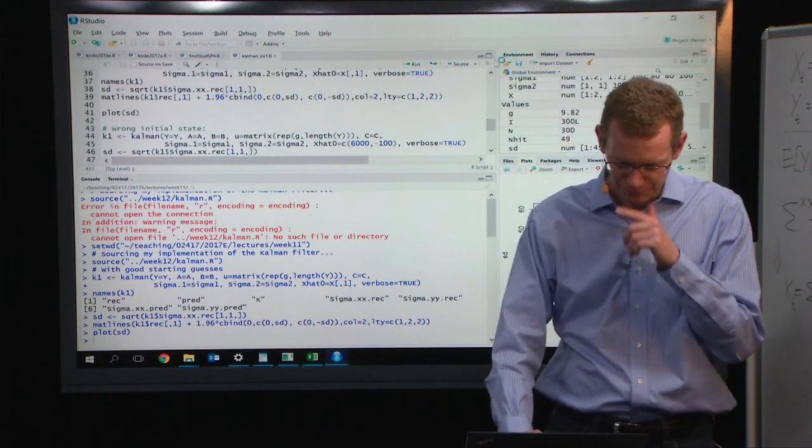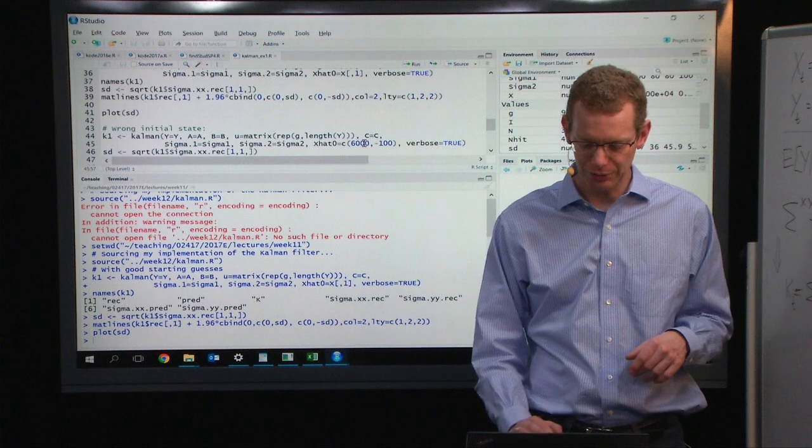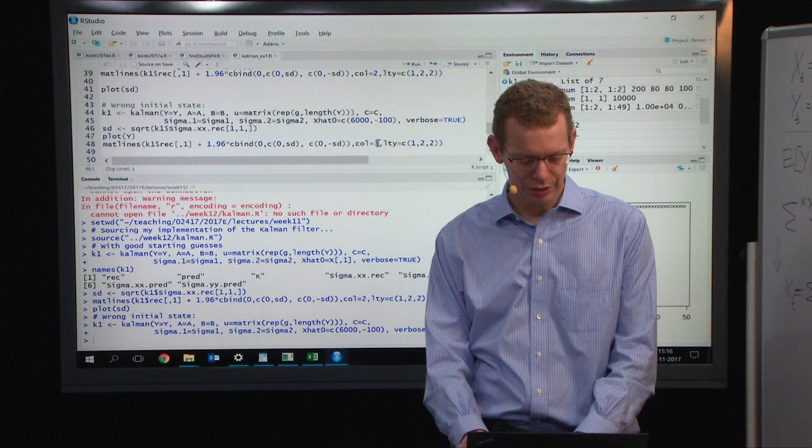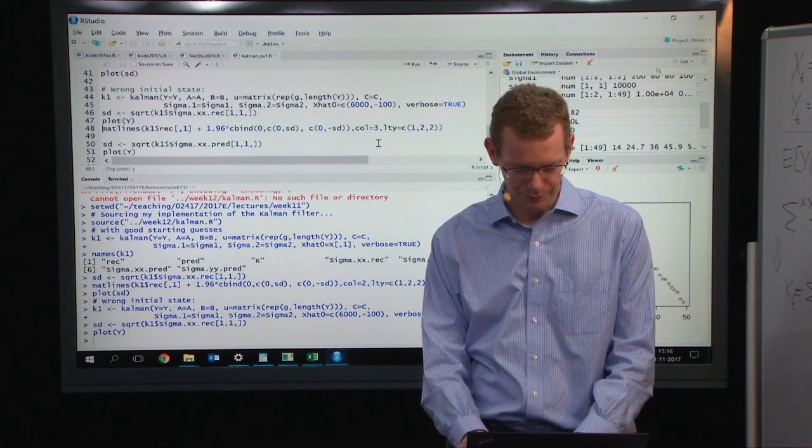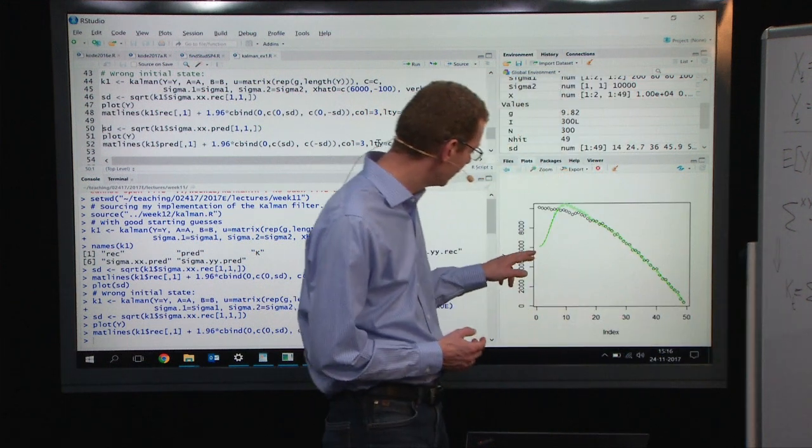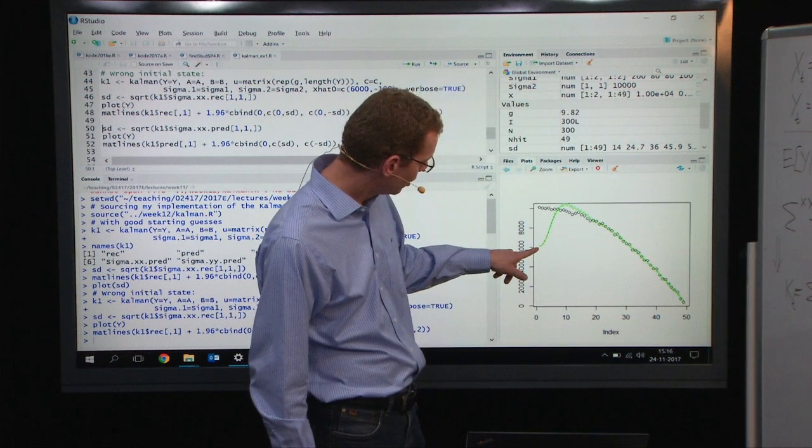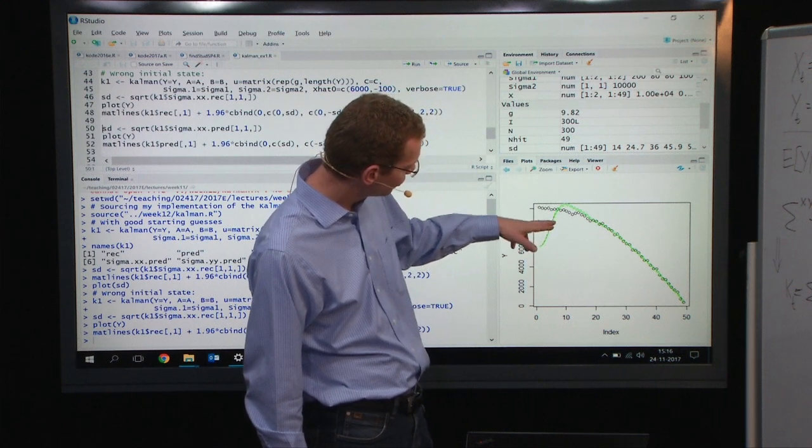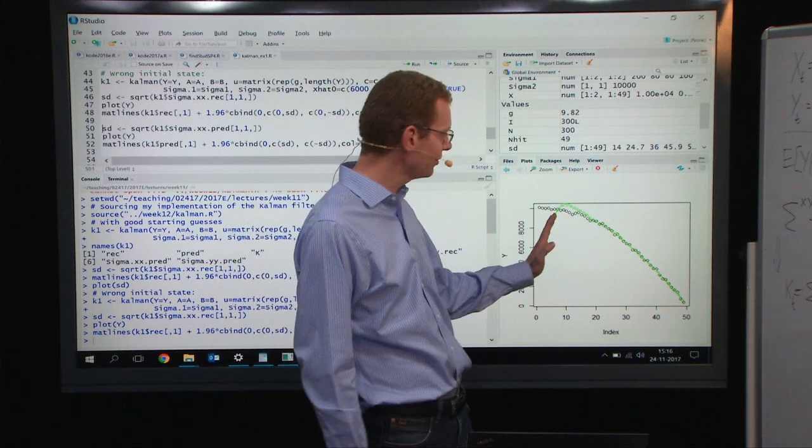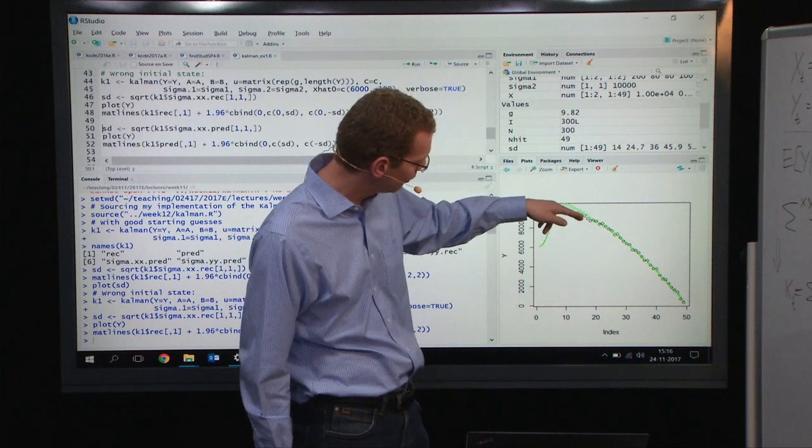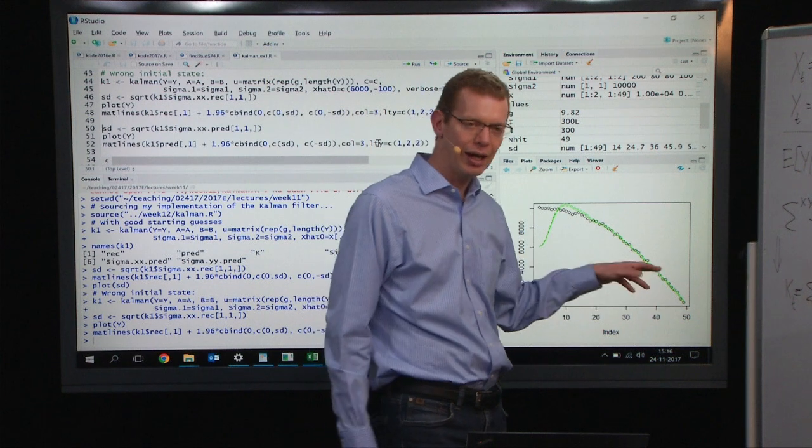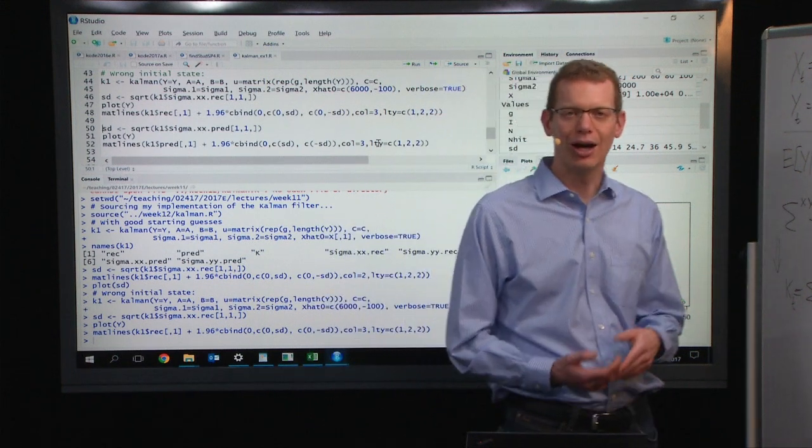If we try to start it somewhere else, say at 6,000 meters with a negative velocity initially, and run the same plot as before, you can see what happens. We start somewhere totally wrong, but very quickly we reconstruct and get up close to where we're supposed to be. We overshoot because we have too large a velocity upwards, we need to trim that a little bit. But then, at around observation 15 or so, we're back on track, and at the end of time, our filtering is very good.